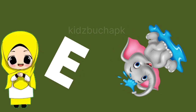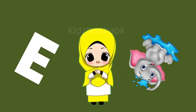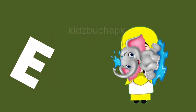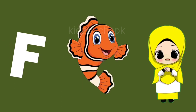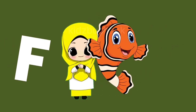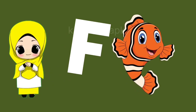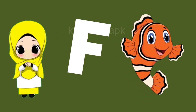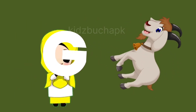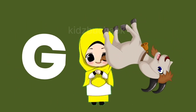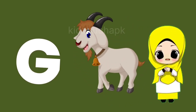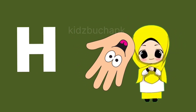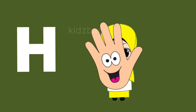E for elephant, elephant means hathi. F for fish, fish means machli. G for gaut, gaut means bakri. H for hand, hand means hath.